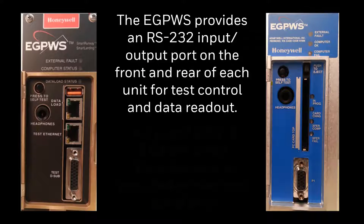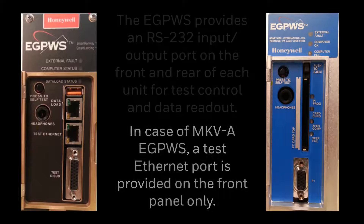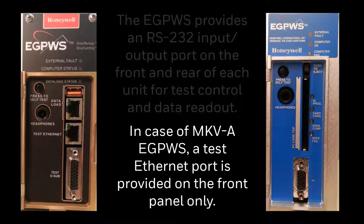The eGPWS provides an RS-232 IO port on the front and rear of each unit for test control and data readout. In the case of the Mark5A eGPWS, a test Ethernet port is provided on the front panel only.